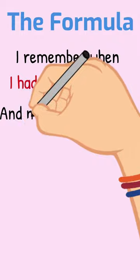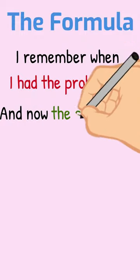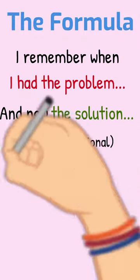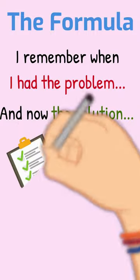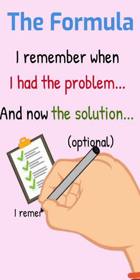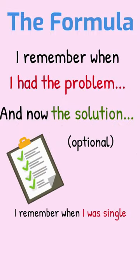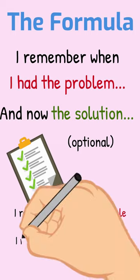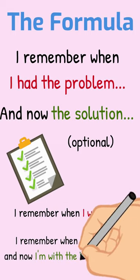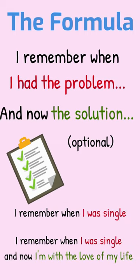Then if you want, you can add the phrase 'and now,' followed by the solution. This part of the phrase helps you get more specific on what the solution needs to be. With the above example, the complete phrase would be, 'I remember when I was single, and now I'm with the love of my life.'